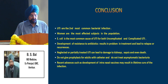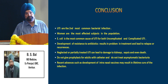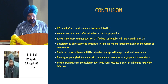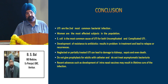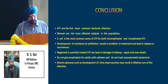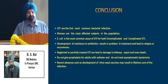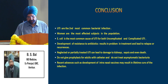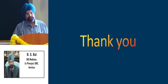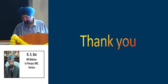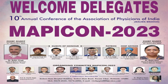In conclusion, UTIs are the most common bacterial infections after respiratory infections, with women being the most affected population. E. coli is the most common cause for both uncomplicated and complicated UTI, and up to 20% resistance to E. coli treatment is being seen. Neglected or partially treated UTI can lead to kidney damage, sepsis, and even death. Do not give prophylaxis for adults with catheters and do not treat asymptomatic bacteriuria. Recent advances such as development of intranasal vaccines may result in lifetime cure of the infection. Thank you.